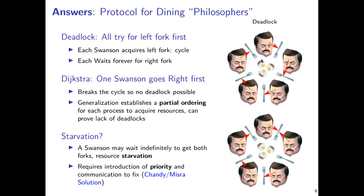One possible improvement: if you pick up a fork and can't get the other one, just put your fork back down. But this could lead to a so-called livelock — everyone picks up their left fork, can't get their right fork, puts down the left fork, and then tries again — synchronously, over and over. You get the notion of a livelock where everyone is doing something but no one is ever making forward progress, and the group suffers. We need to break this cycle.